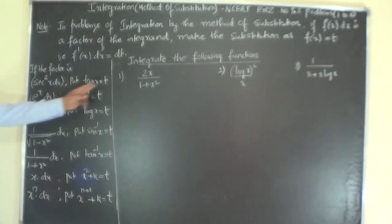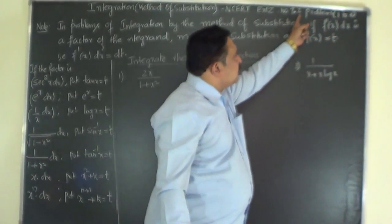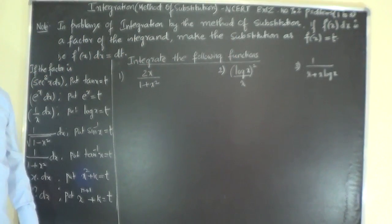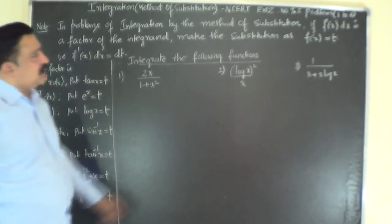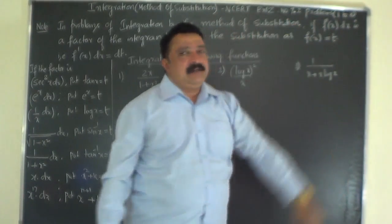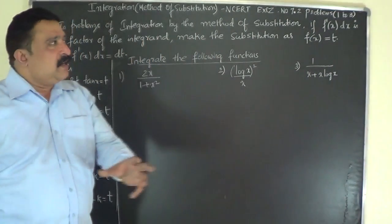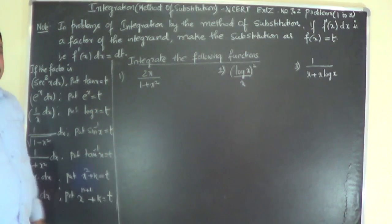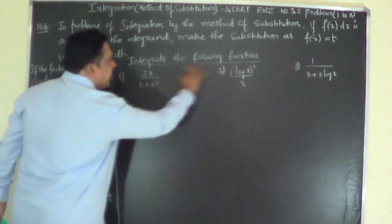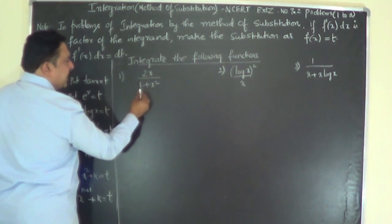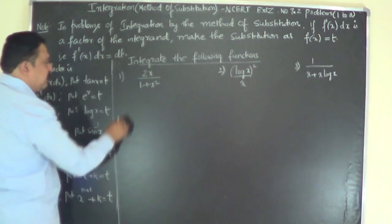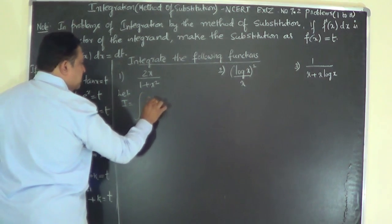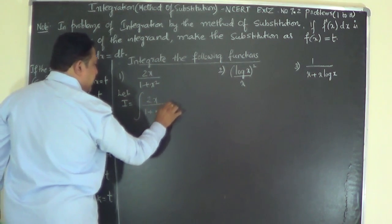Here are the first three problems from exercise 7.2. All problems are based on the method of substitution. Let's begin with the first problem: integrate the following function. Let I = ∫ 2x/(1 + x²) dx. This is the given integrand. The moment you write the integral as I, you must write the dx symbol.